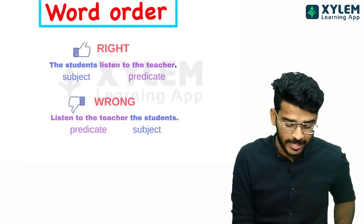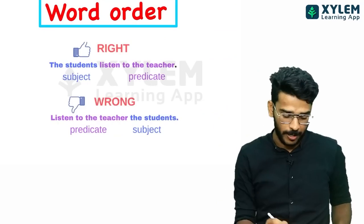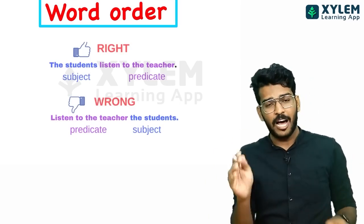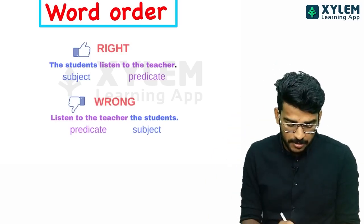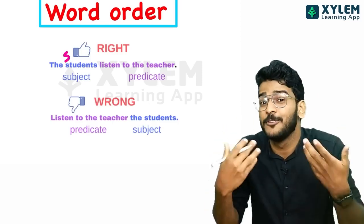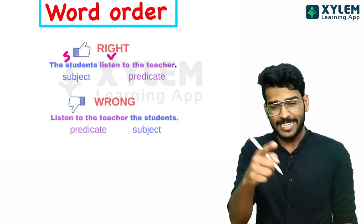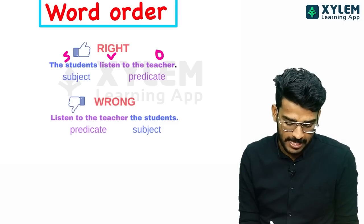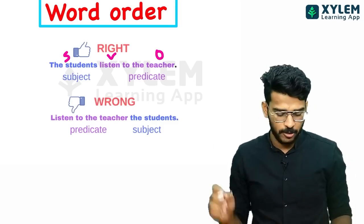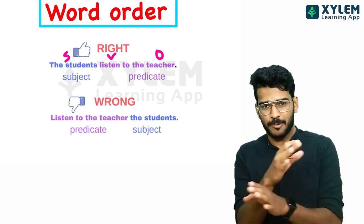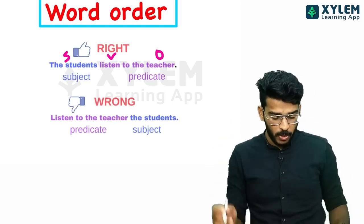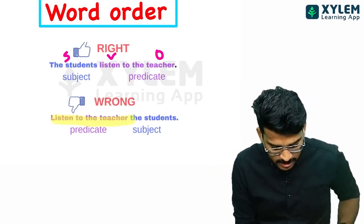Next one: word order. If you are aware of the word order, you will be mistaken. Now we have English word order. The students listen to the teacher. The student — what is the subject? Listen — what is the verb? S-V, to the teacher — then object. S-V-O, that is the English word order. Subject is the student, listen to the teacher is the predicate.